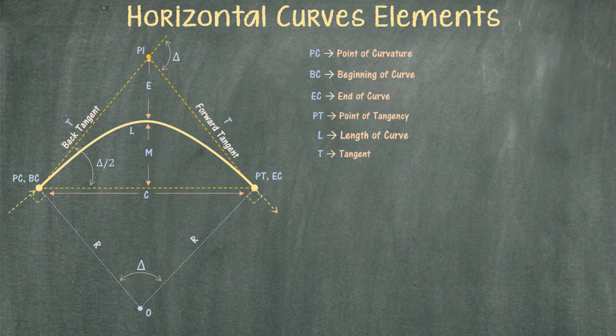Now, if we were to extend both tangents far enough, eventually both lines would come to an intersection. This point is simply called the Point of Intersection, or PI. This point of intersection is quite important, as you will find out once you start solving more problems — they're going to reference back at least to the name of this angle.